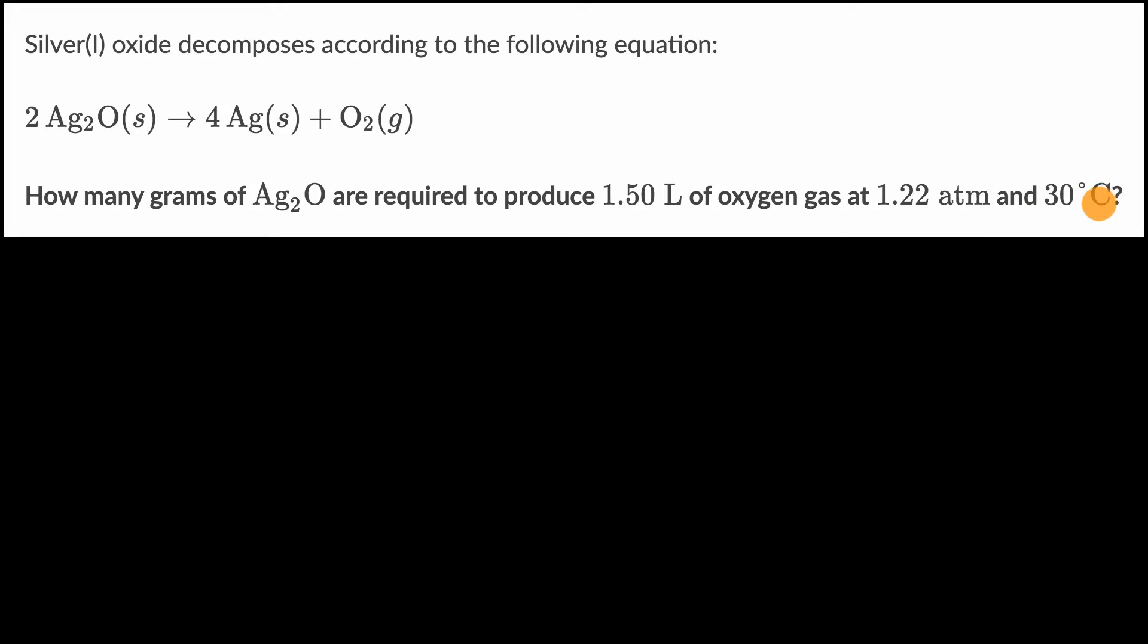Pause this video and see if you can figure this out. If you know how many moles of oxygen you need to produce, then you need twice as many moles of silver oxide because the ratio is 2 to 1.